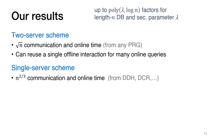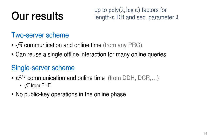Our second result is a single-server offline-online PIR scheme which uses n to the two-thirds communication and n to the two-thirds online time. In terms of assumptions, what we need here is black box use of any single-server PIR scheme with low communication and additively homomorphic encryption, both of which can be built from a variety of public key assumptions. If we are willing to use heavier tools, namely FHE, then we can recover the square root of n running time. An extra property of our single-server scheme is that it doesn't require any public key operations in the online phase, which makes the online phase even faster.